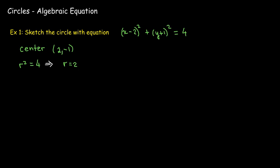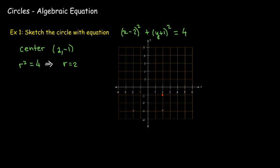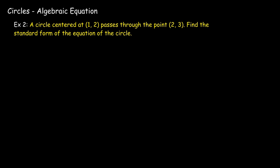We can now plot the center at the point (2, −1) and draw a circle with that center and radius 2. Let's look at a different example. A circle centered at (1, 2) passes through the point (2, 3). We'd like to find the standard form of the equation of this circle.